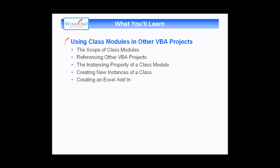Then we'll talk about how you can set references to other VBA projects. We'll talk about the instancing property of a class which makes it exposed to external VBA projects. Then we'll explain how you can create new instances of your class from other VBA projects, which isn't quite as simple as it should be. And as a final nice way to wrap up your classes and distribute them, we'll briefly cover how you can create an Excel add-in.